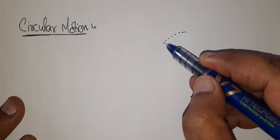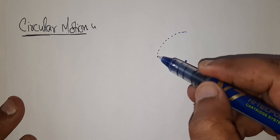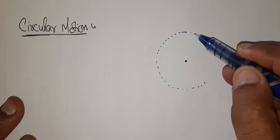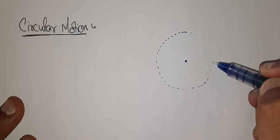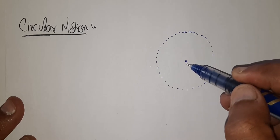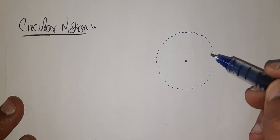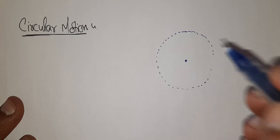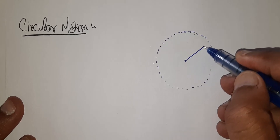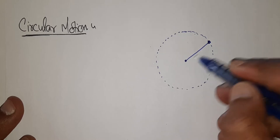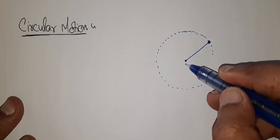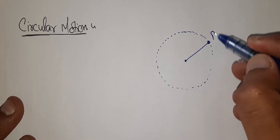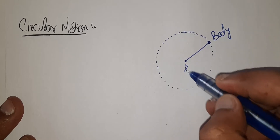The body moves around a fixed point in such a way that it is always at a fixed distance from that fixed point. This is our body and this is the fixed point.